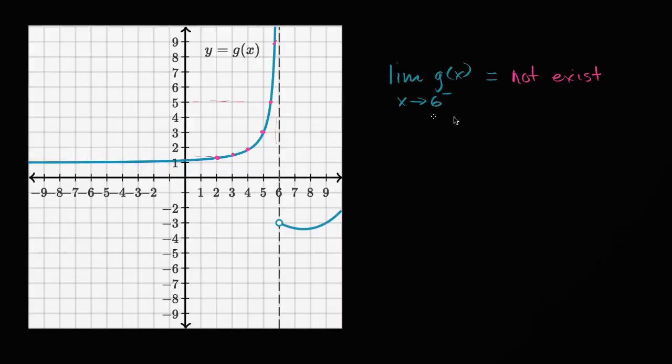And this is interesting because the left-handed limit here doesn't exist, but the right-handed limit does. If I were to say the limit of g of x as x approaches six from the right-hand side, well, let's see.